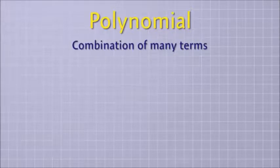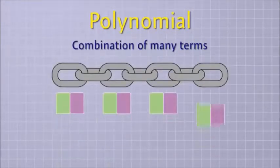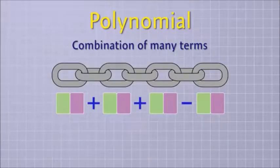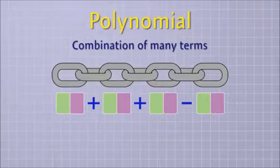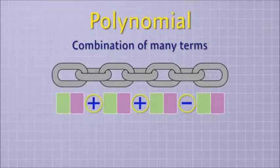First, let's see how this basic idea of a term helps us understand the basic idea of a polynomial. A polynomial is a combination of many terms. It's kind of like a chain of terms that are all linked together using addition or subtraction. The terms themselves contain multiplication, but each term in a polynomial must be joined by either addition or subtraction.